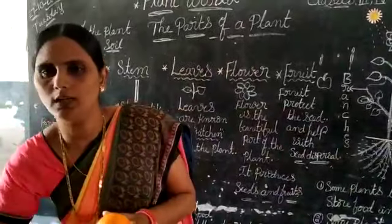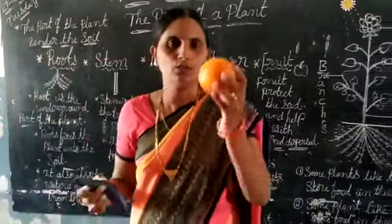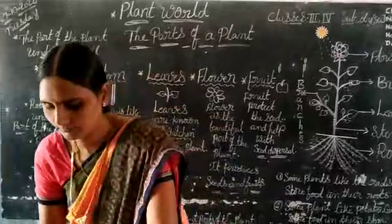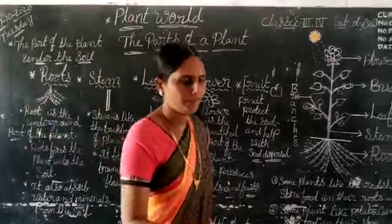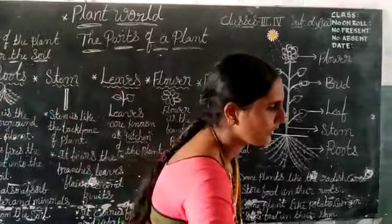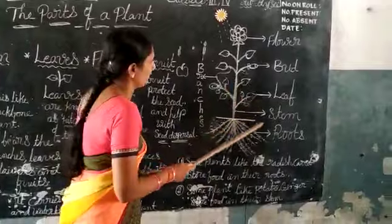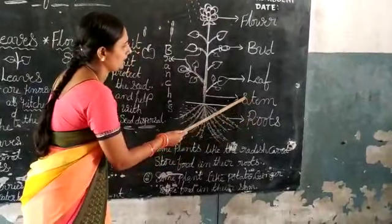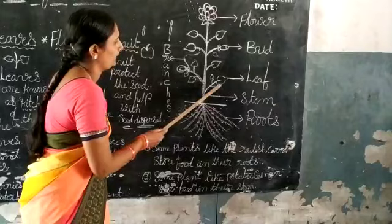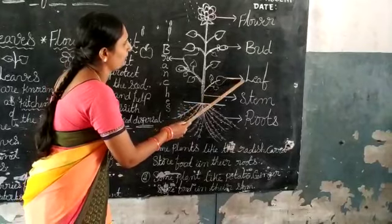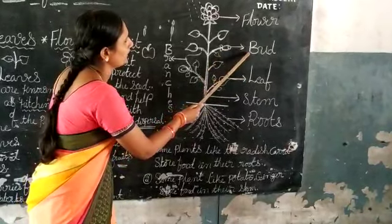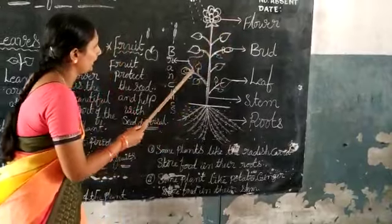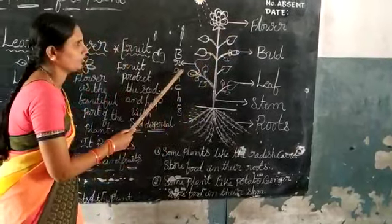Some plants give us fruits and vegetables also. I repeat again — the parts of a plant are roots, stem, leaf, bud, flower and branches.